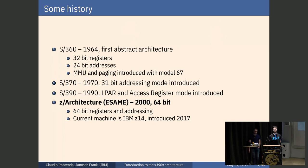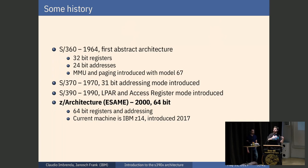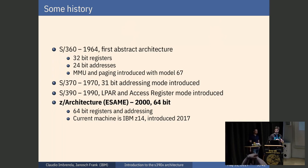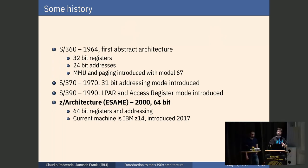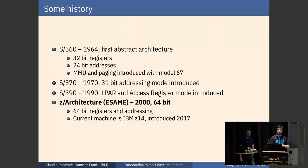It all started in the 60s with the S/360, which was the first abstract architecture. It was a nice idea to have an architecture independent from the implementation — you could sell a cheap mainframe, and if the company grew they could buy a more expensive one and reuse the software. It was a brilliant idea. Already in the 60s it started with 32-bit registers, 24-bit addresses, and with the model 67, MMU and paging were already present. It was quite advanced.